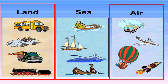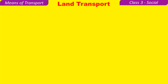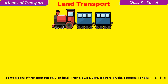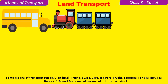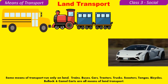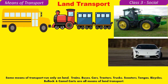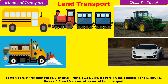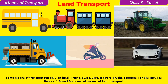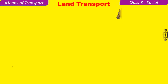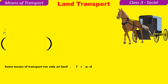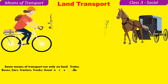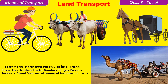Let us learn about them one by one. Land transport — some means of transport run only on land. Trains, buses, cars, tractors, trucks, scooters, tongas, bicycles, bullock carts, and camel carts are all means of land transport.